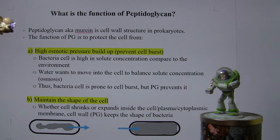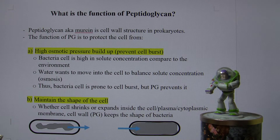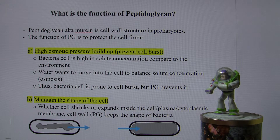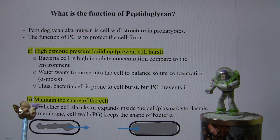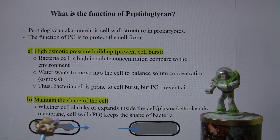Peptidoglycan itself serves two important functions. One, it prevents cell burst. And two, it maintains the shape of the cell.